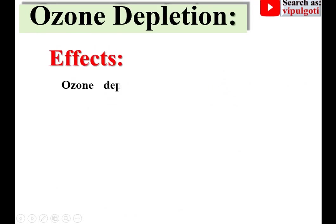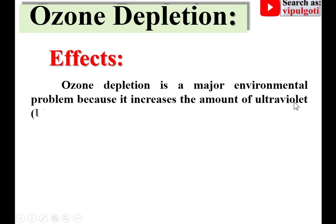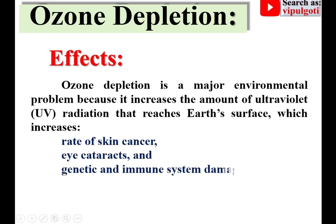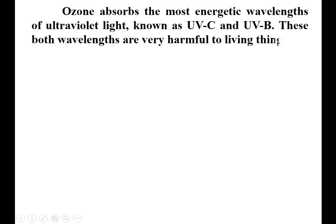Ozone depletion is a major environmental problem because it increases the amount of ultraviolet — UV — radiation that reaches Earth's surface, which increases the rate of skin cancer, eye cataracts, and genetic and immune system damage. Ozone absorbs the most energetic wavelengths of ultraviolet light, known as UVC and UVB, and both of these wavelengths are very harmful to living things.